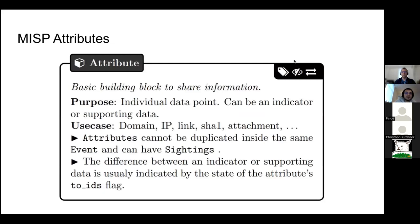We'll start with the data layer and the attributes. The attribute is the most basic building block you have at your disposal to encode information. Typical use cases include encoding a domain, an IP address, different file hashes, and so on. Something important about attributes is that they can have two faces: they can be either what we call an indicator, or supporting data — also called an observable. The difference is indicated by the IDS flag, which means 'to intrusion detection system,' but nowadays its meaning is broader: should this attribute be fed to my protective tool or not?